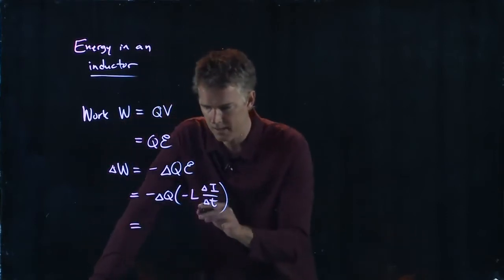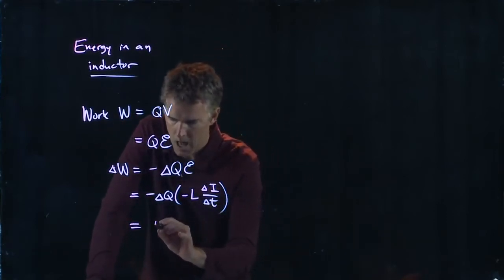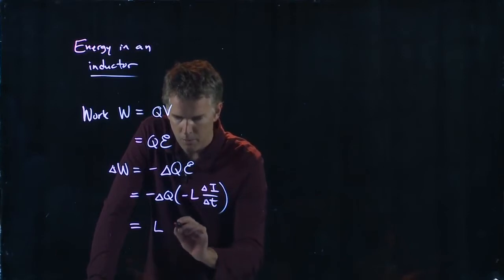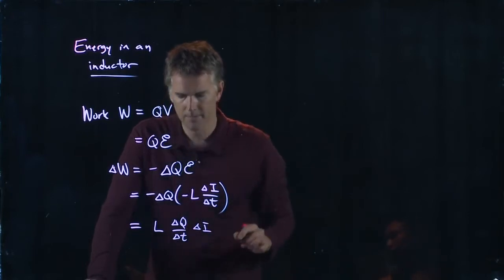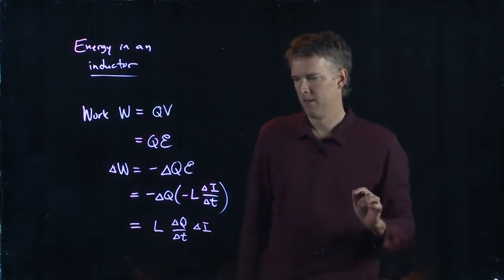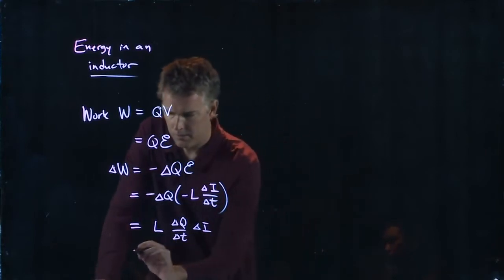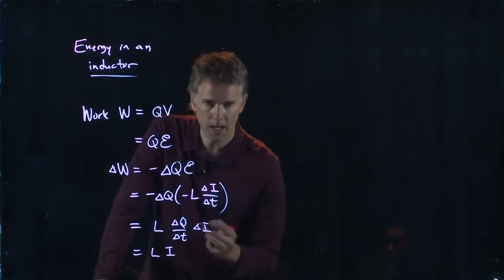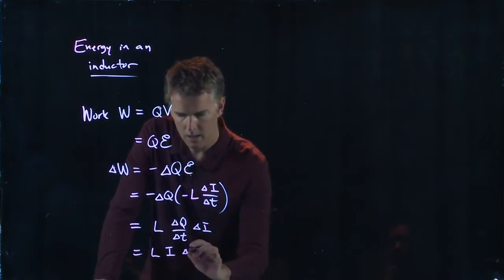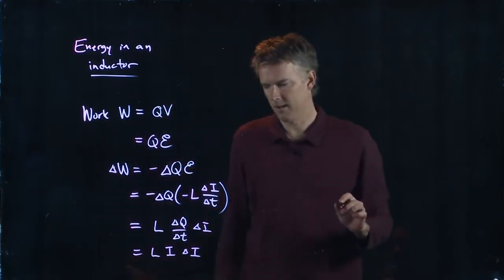Look what happens. The minus signs cancel out and we get L out in front. We get a delta Q over a delta T. And then we still have a delta I. But this is L times delta Q over delta T is I. And then we have a change in I.